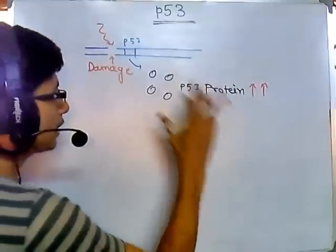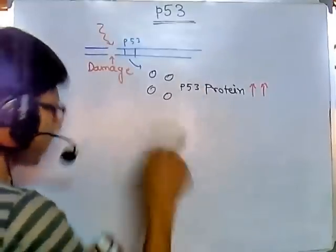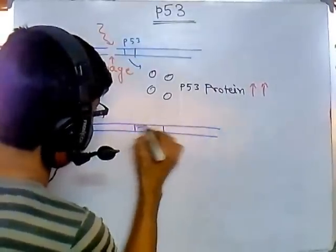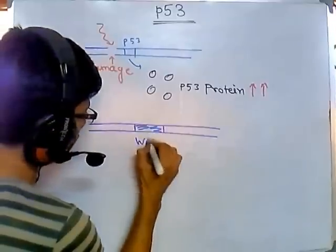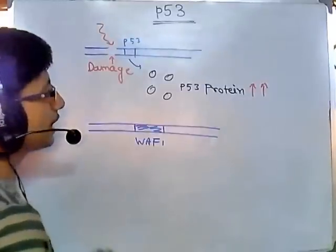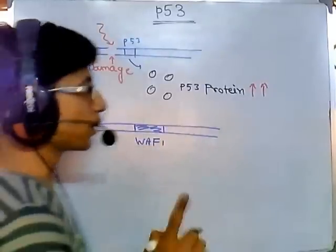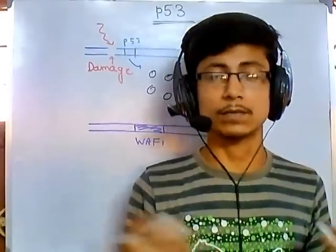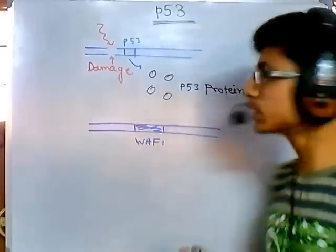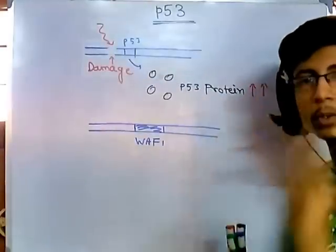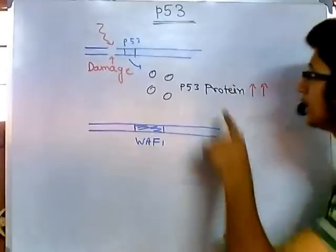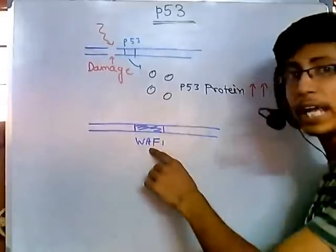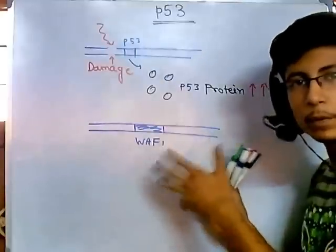Once the p53 protein level goes up inside the cell, it will go and sit onto the promoter of another gene called WAF1. p53 protein is a type of transcription regulator — it sits on promoters and regulates the productivity of certain genes. In this case, p53 is the transcription regulator of many genes, one of which is WAF1.